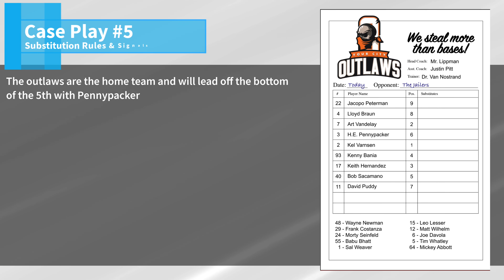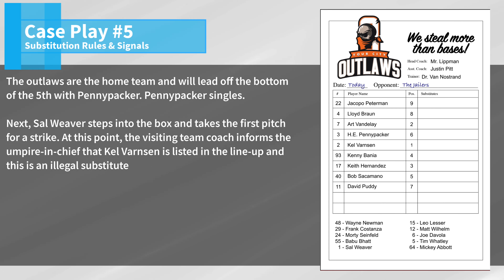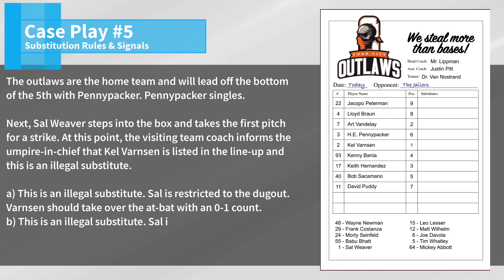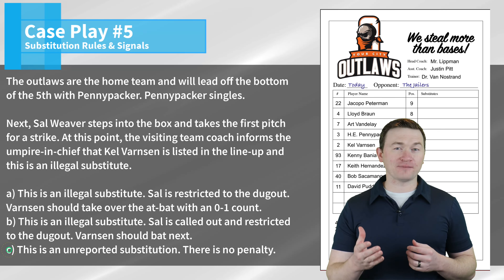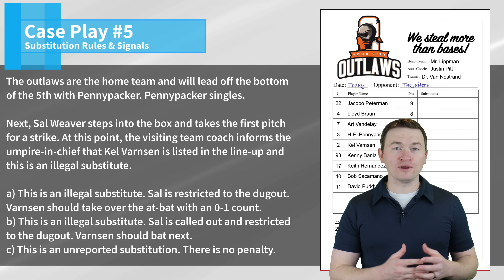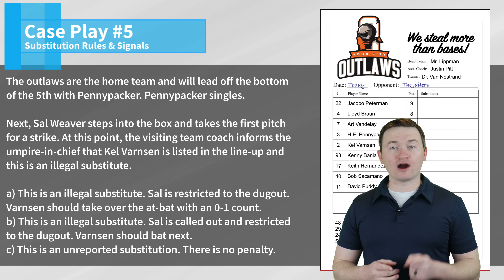Case play number five: the Outlaws are the home team and will lead off the bottom of the fifth with Penny Packer. Penny Packer singles. Next, Sal Weaver steps into the box and takes the first pitch for a strike. At this point, the visiting team coach informs the umpire in chief that Kel Varnson is listed in the lineup and this is an illegal substitute. The correct answer is C — this is an unreported substitution and thus it's legal. The key here is that we need to remember we're more likely to have an unreported substitution than an illegal substitution.